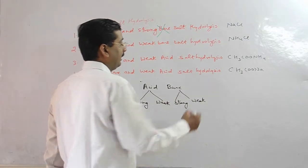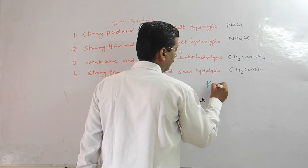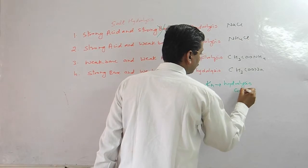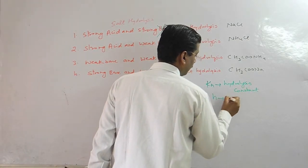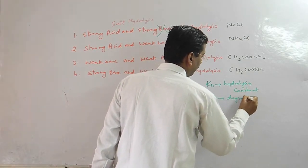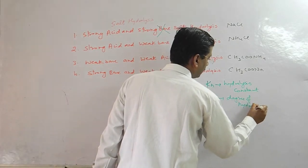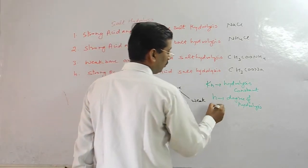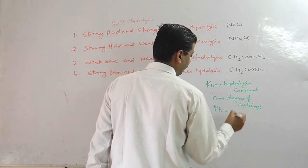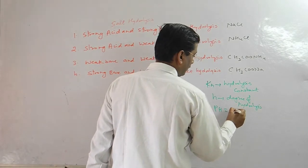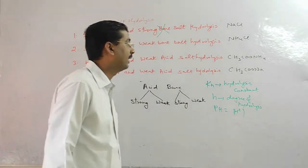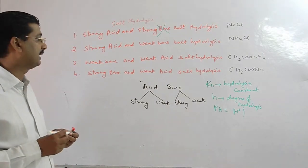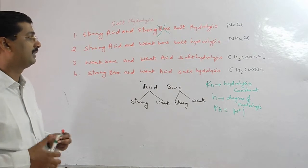In these three cases you will have K_H - the hydrolysis constant. H is the degree of hydrolysis. This is the degree of hydrolysis and the solution pH. In salt hydrolysis we have to discuss these three points. We will discuss them one by one.